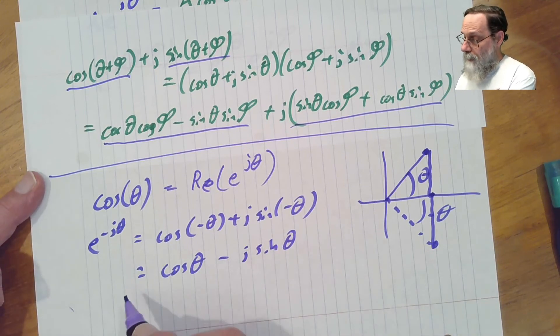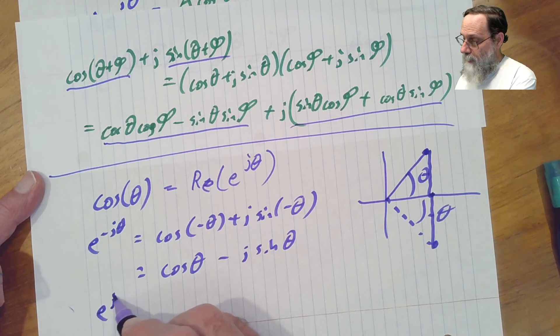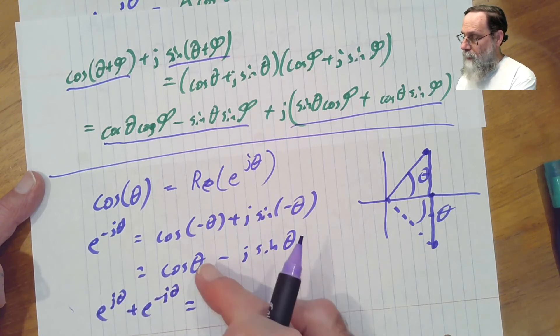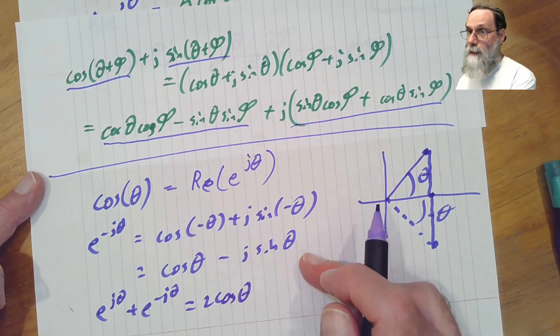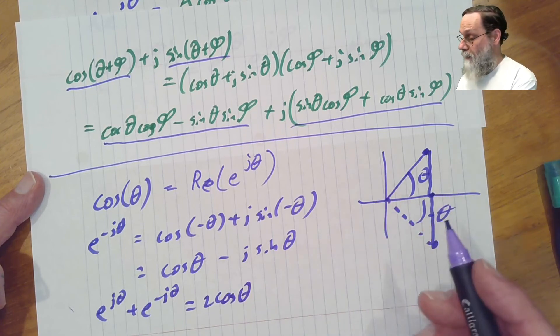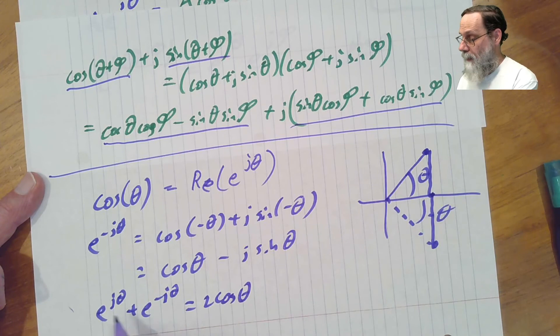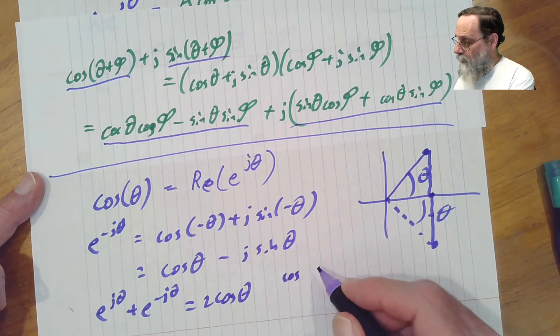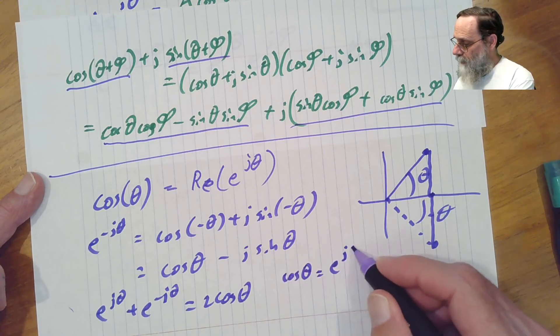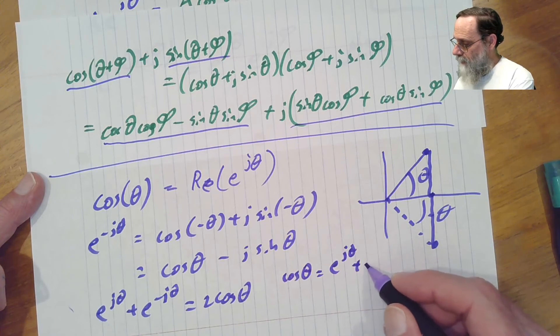All right, what can we do with that? Well, let's look at e to the j theta plus e to the minus j theta. The real parts, they're both going to be cosine theta, so we're going to get two cosine theta. The imaginary parts have opposite signs and are the same magnitude, so we're just going to cancel. And we get e to the j theta plus e to the minus j theta is two cosine theta, which we could also write as cosine theta equals e to the j theta plus e to the minus j theta over two.